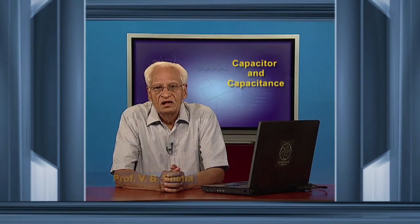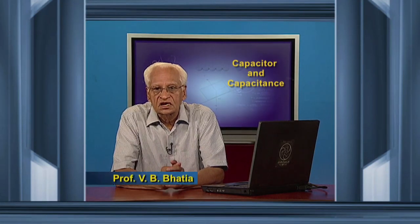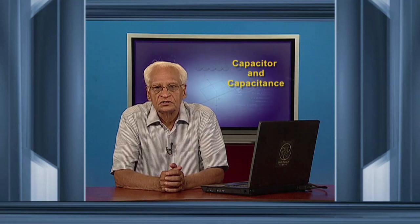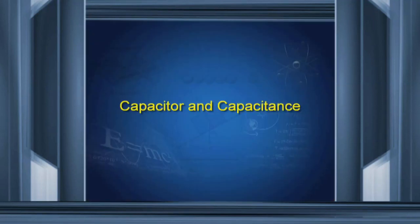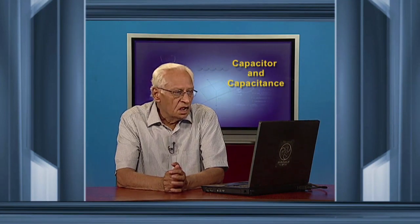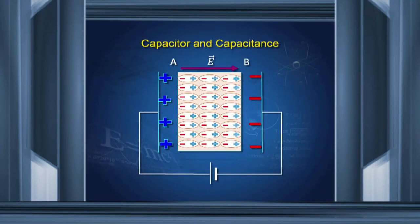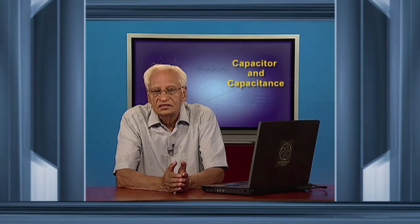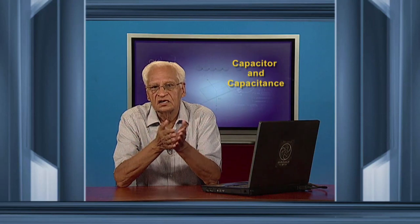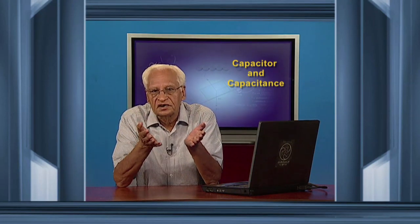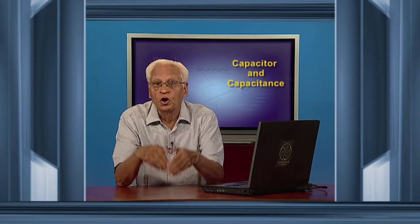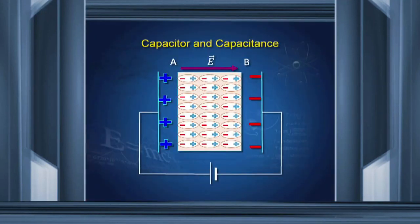In this lecture, we now start with current electricity and the first topic we have chosen is capacitor and capacitance. The question is how do we store charge on a conductor by charging it to a certain potential, but we cannot charge the conductor beyond a certain potential because if we do, the charge starts leaking and the potential does not increase. If the potential does not increase, the charge that this conductor holds does not increase. That is the topic we shall discuss today.